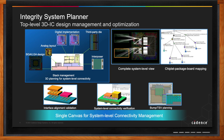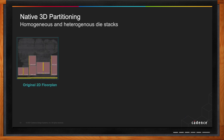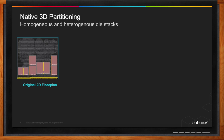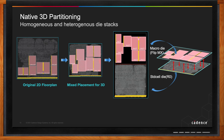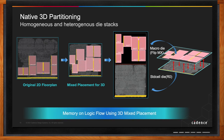3D IC means different things to different people. For some it's just 2.5D interposer-based designs, but there are customers who want an automated full 3D stacking flow. What that involves is taking a 2D design and intelligently partitioning it so that it can be converted from a 2D to a 3D stack. There are multiple ways of separating out components of a 2D design, and one really popular method seen through research is a memory-on-logic stack.